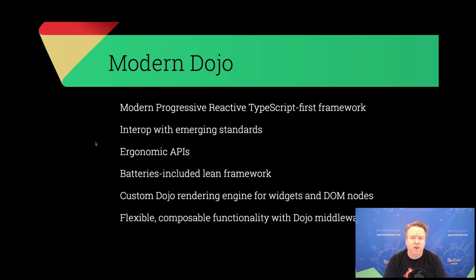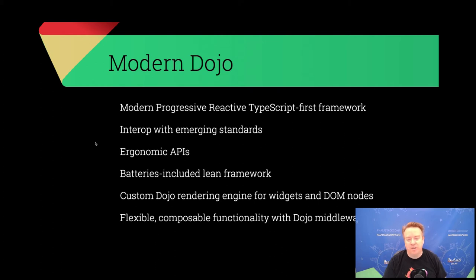We have gone to great lengths to align with and interop with emerging standards — from Intersection Observers and Resize Observers to the forthcoming Internationalization API and inert state on form components. We like to describe modern Dojo as a batteries-included lean framework, but the result is quite small. We do give you a lot of what you need to build a modern application without having to decide which routing library, which component system, or which build optimization tool to use.